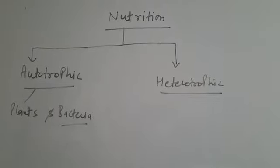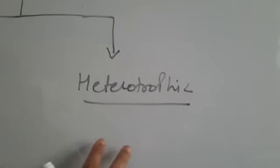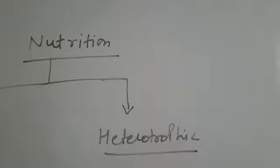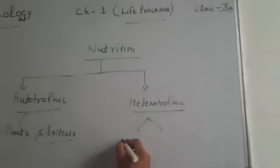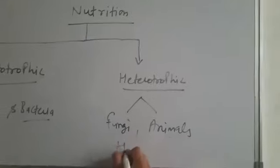The second one is heterotrophic mode of nutrition. Heterotrophic mode of nutrition is that nutrition in which the organism cannot make their own food from simple inorganic material like carbon dioxide and water, and depends upon others for their food. Examples include fungi, animals, and even human beings.